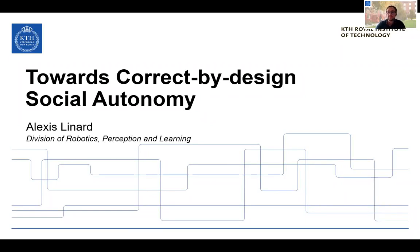Today I would like to talk about social autonomy and how we can guarantee that our autonomous systems and robots are socially acceptable. In other words, how we can ensure correct by design social autonomy.